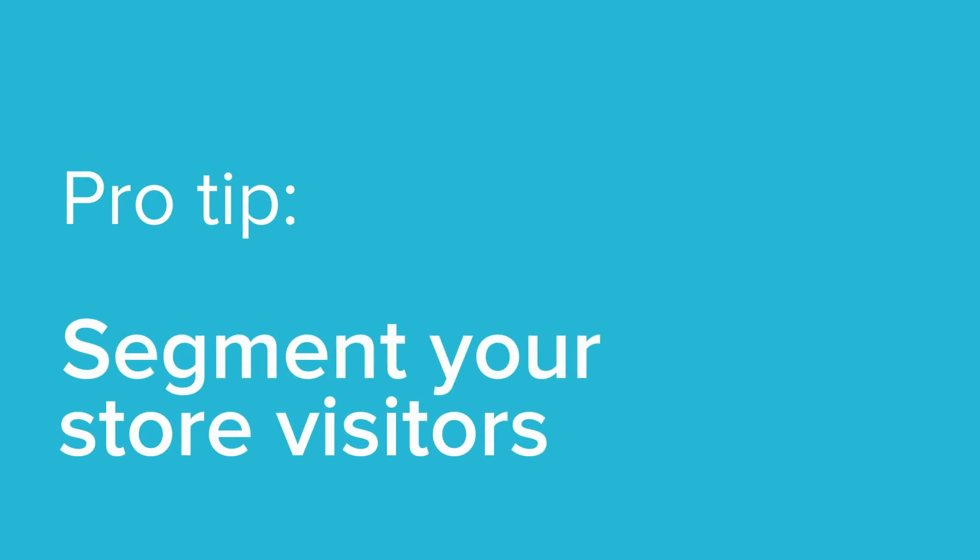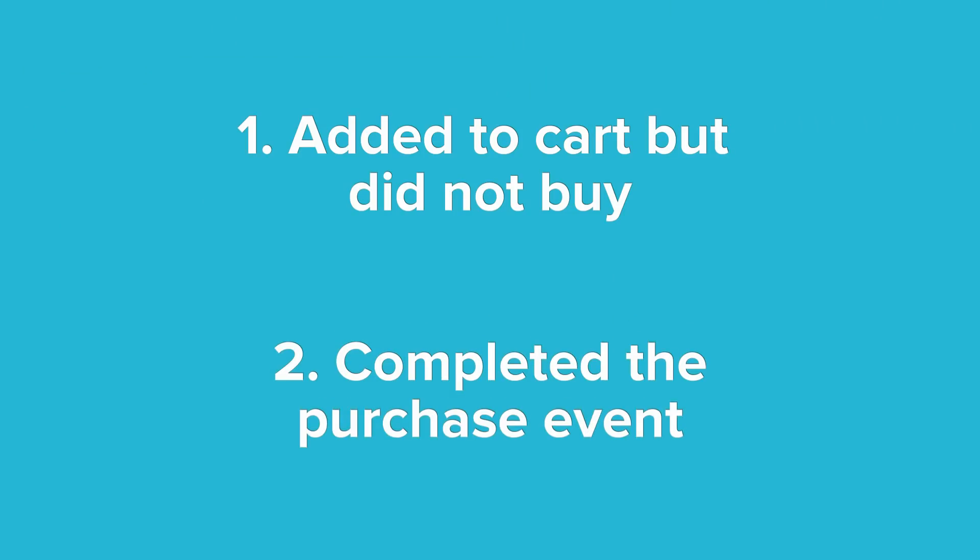So how do merchants use this information? One of the best things you can do with your data is segment your store visitors. For example, you can create one group of visitors who completed the add to cart event but did not complete the purchase event — let's call them browsers. You can also create another group of visitors who completed the purchase event. These people have spent money in your store, so we'll call them customers. Thanks to the Facebook Pixel, you can stay in the minds of your browsers and your customers with retargeting ads.